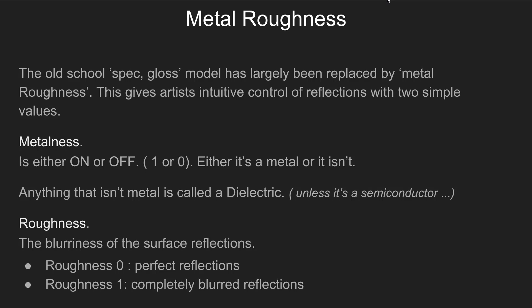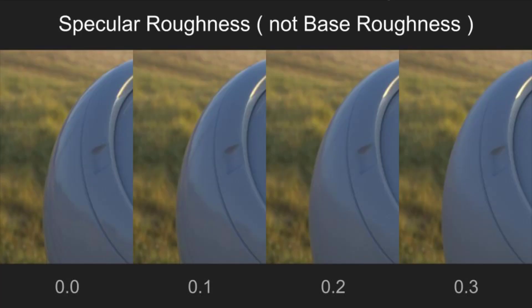This leads to the metal roughness model. The old school spec gloss model has largely been replaced by this metal roughness model, and it gives artists a much more intuitive control of reflections with two simple values: metalness and roughness. Metalness, quite simply, is either on or off — something is either metal or it's not. Anything that isn't a metal is called a dielectric, unless it's a semiconductor, but generally we don't see a lot of naked semiconductors in our CG scenes.